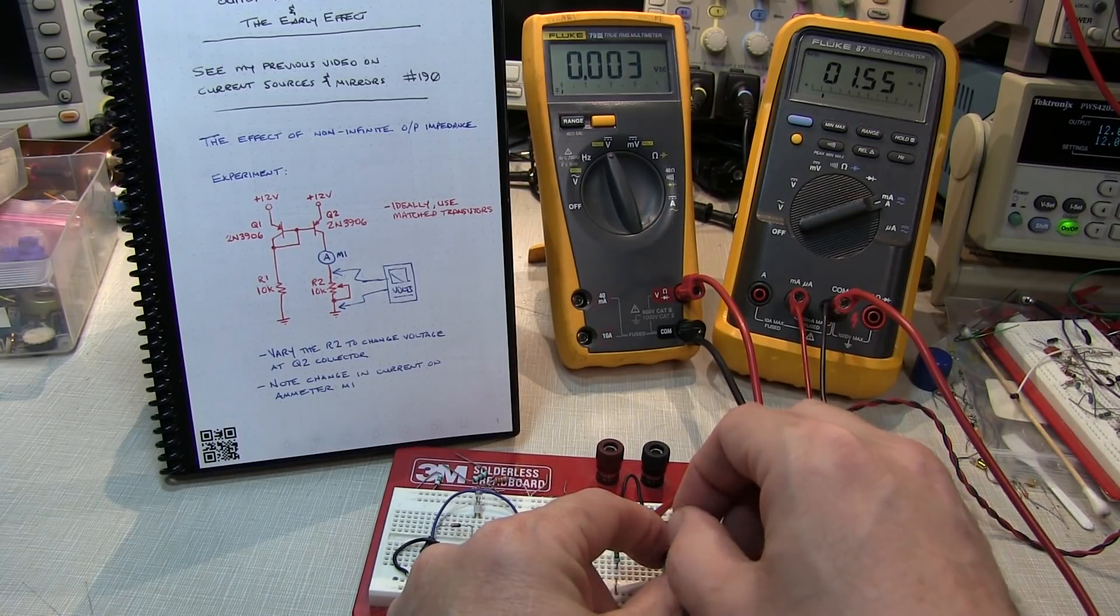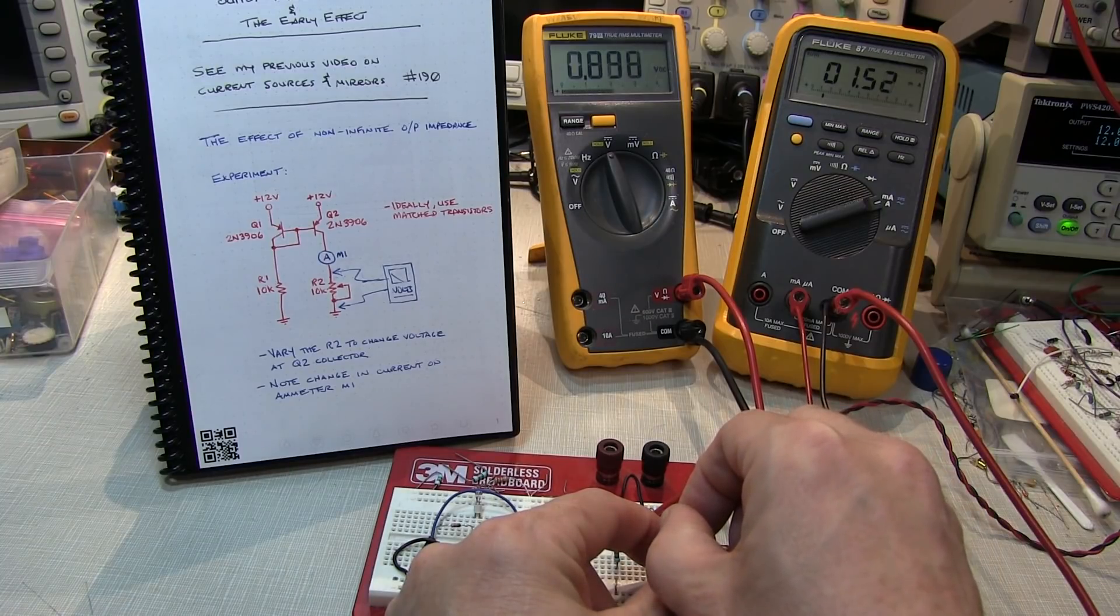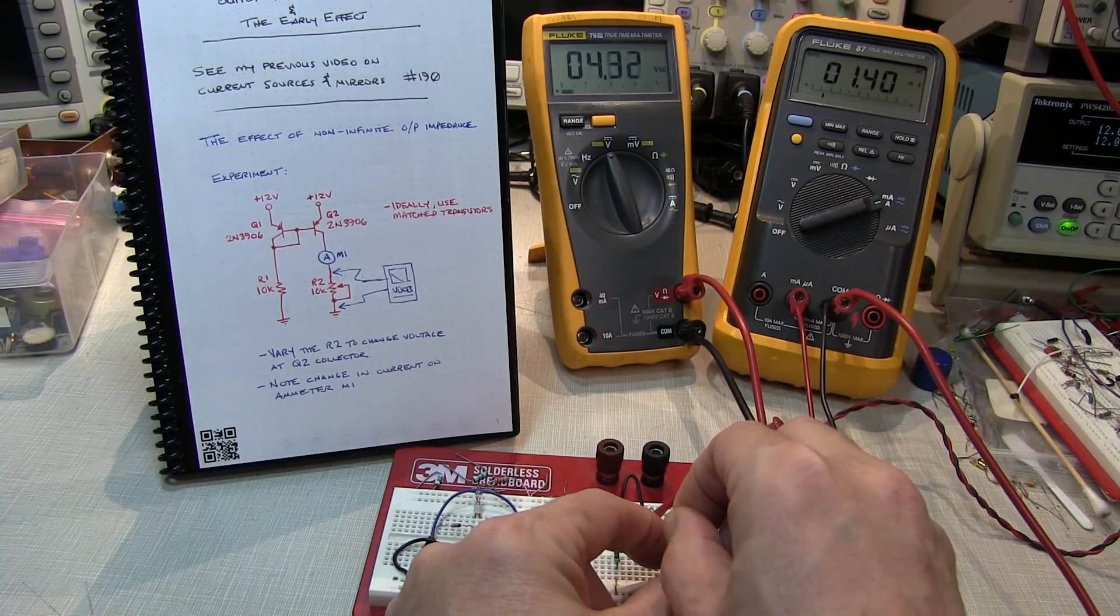So I went from 1.1 milliamps to 1.5 milliamps just by changing the load on the current source. Not a very ideal current source. And this is all due to something called the early effect.